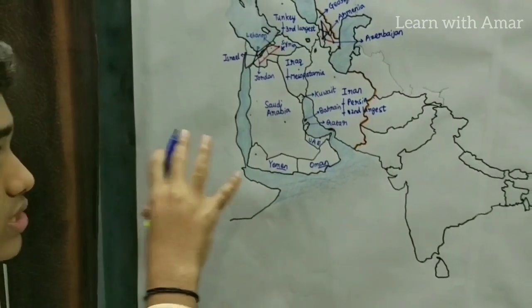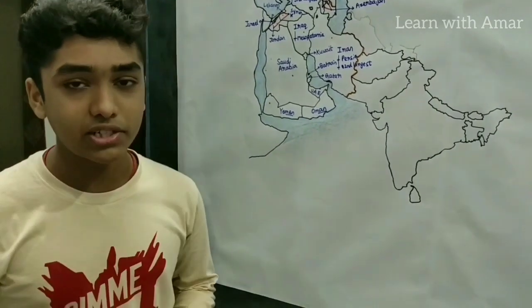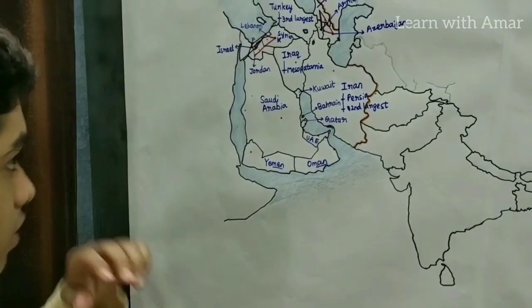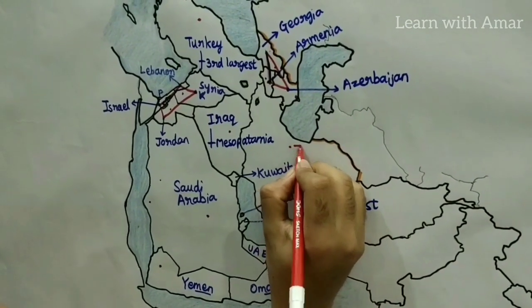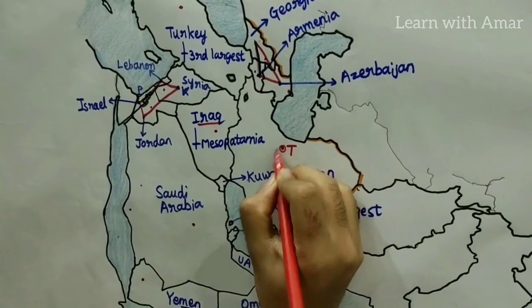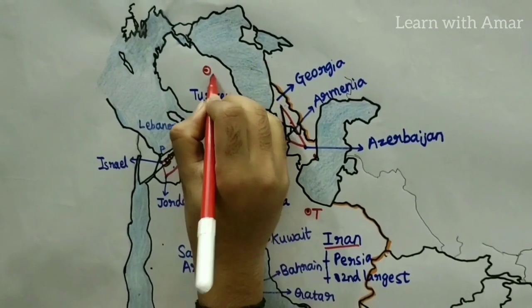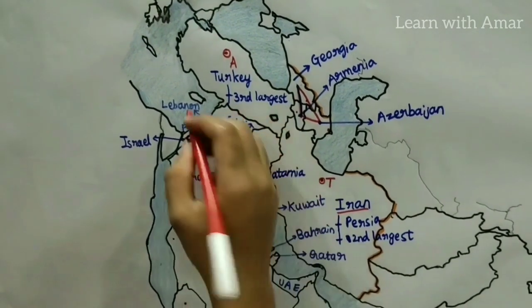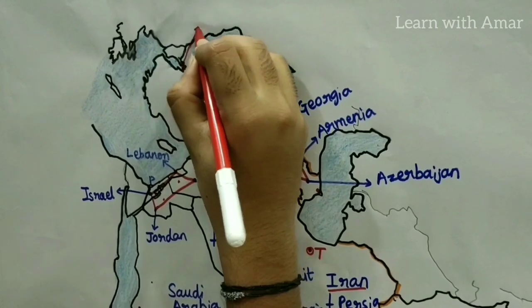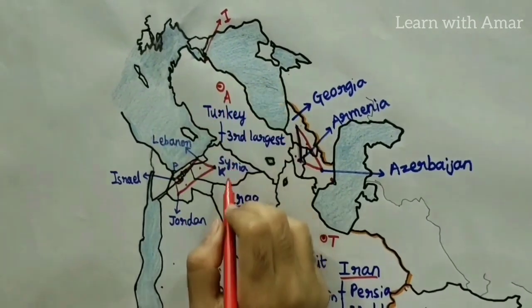These are the countries of West Asia, learned in four parts. Now let's look at the capital cities and also a few major cities in these countries. Iran's capital city is Tehran. Iraq's capital city is Baghdad. Turkey's capital city is Ankara. And an important city in Turkey, located in both European Turkey and Asian Turkey, is Istanbul — previously known as Constantinople.